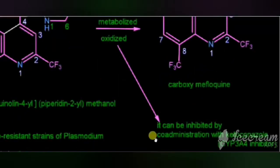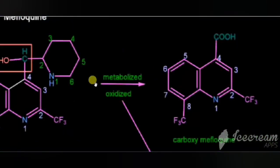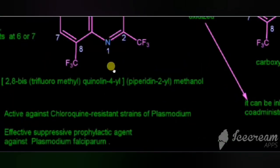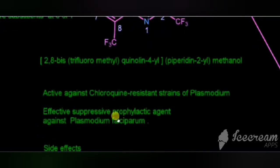This oxidation can be inhibited by co-administration with a cytochrome 3A4 inhibitor — for example, ketoconazole. If co-administered with ketoconazole, that oxidation would be inhibited. Mefloquine is active against chloroquine-resistant strains of plasmodium.